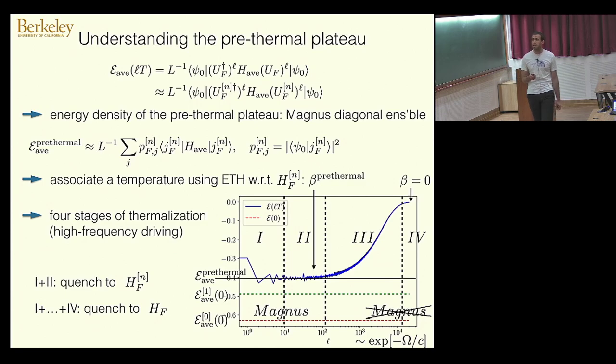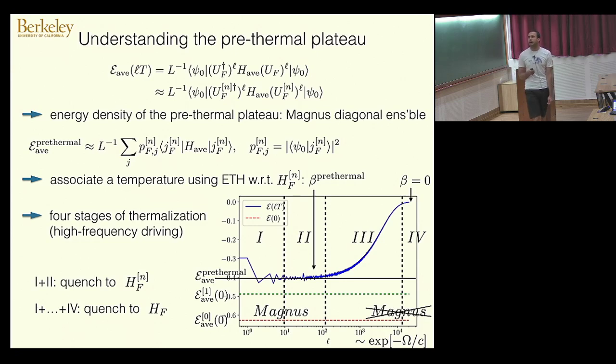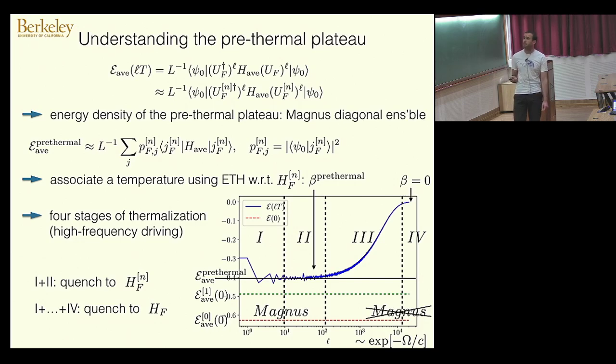The first two stages are captured by the Magnus expansion, but stages three and four are not. An interesting question is: how do we understand microscopically what's happening in stage three — the stage of unconstrained thermalization?